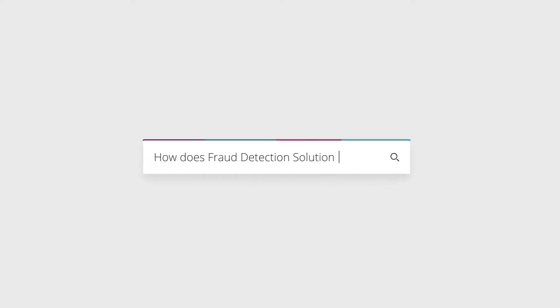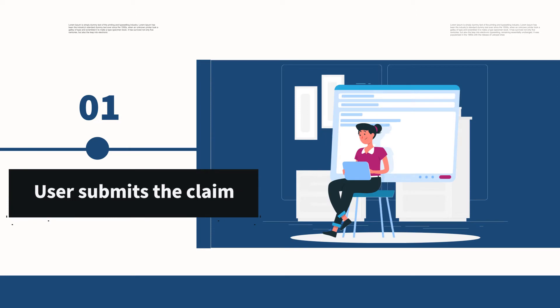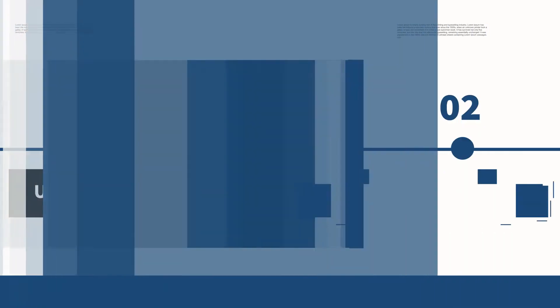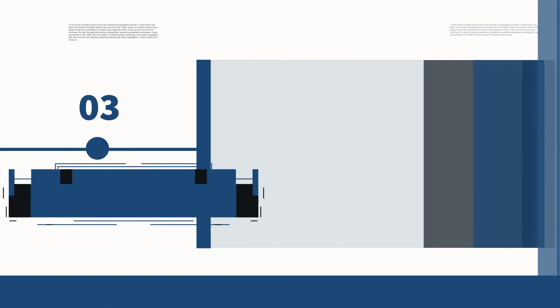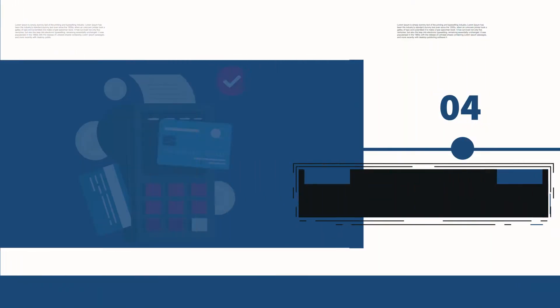Let's dive into the solution. How does it work? The fraud detection solution starts by understanding the claims process. The user submits a claim through perhaps a mobile app or a website — it may even be a paper-based form. The claim is then reviewed, approved, and a payment made. Those are the four steps in the claims process.